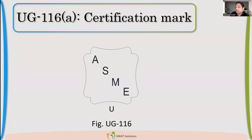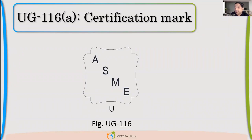Every communication should be in writing. If we follow that, you make the dummy vessel and complete all the process. ASME will come and do the inspection — they will discuss with your designer, marketing, and each and every department. If they are satisfied, they will give the certification mark. It is valid for three years.